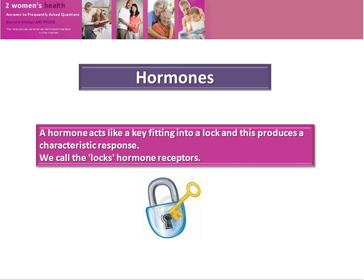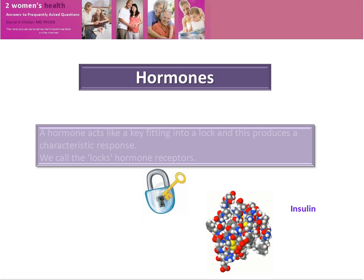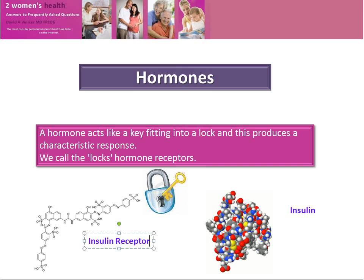A hormone acts like a key fitting into a lock, and this produces the characteristic response when there is an excellent fit. We call the locks hormone receptors. The chemistry of a hormone may be quite complex. This diagram shows the insulin molecule, and here we have the insulin receptor — the insulin molecule fits perfectly into it in a lock-and-key type mechanism.